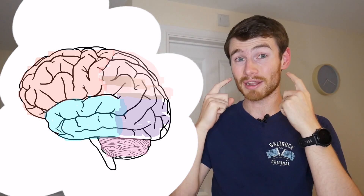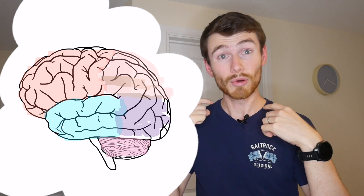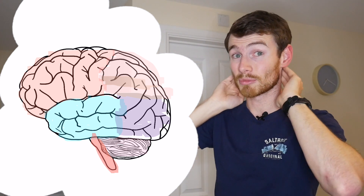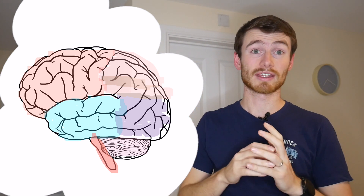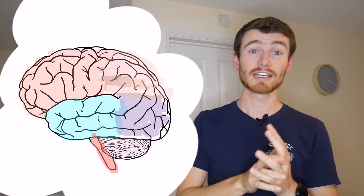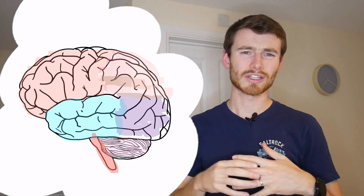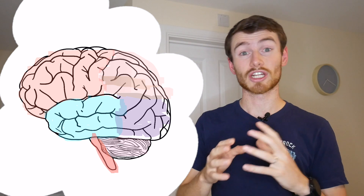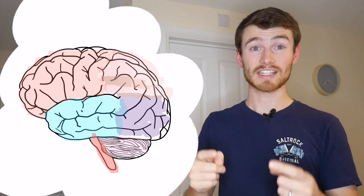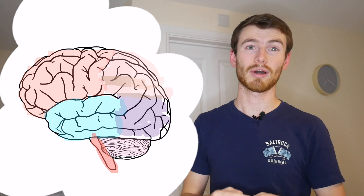Further down from the cerebellum, even more primitive, is the brain stem — roughly at the top of your neck. That is where involuntary things like coughing, controlling your heart rate, changing your breathing rate, and digestion are all controlled.